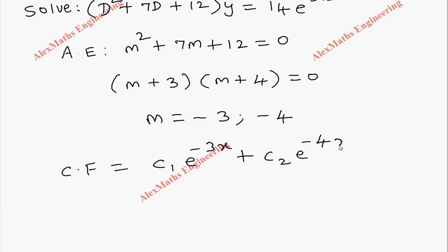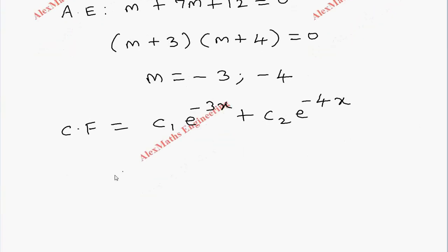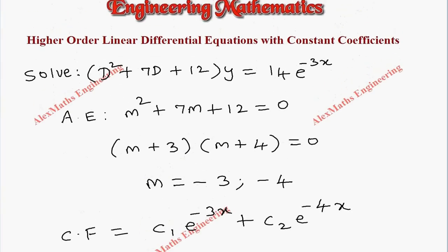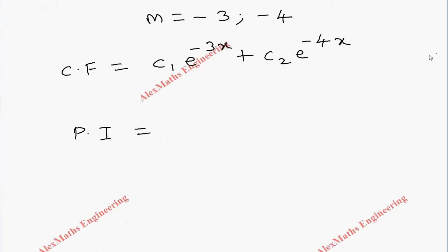Now for the particular integral: the function given on the right-hand side is 14e^(-3x). So PI = 14e^(-3x) divided by the denominator, where we write the quadratic equation D² + 7D + 12.